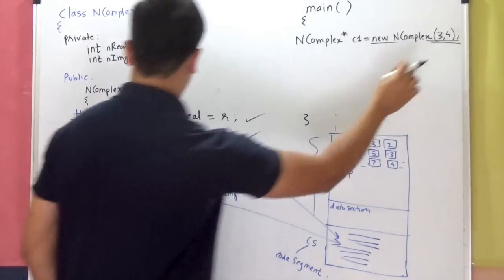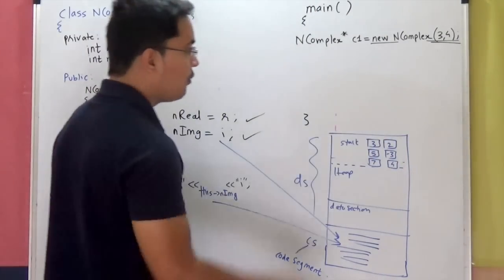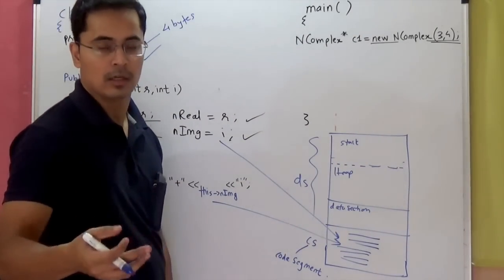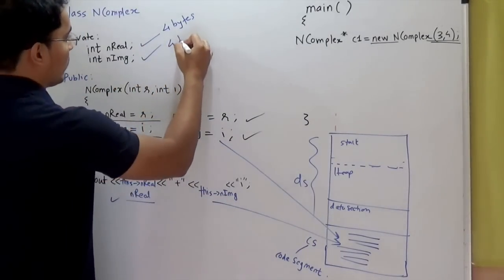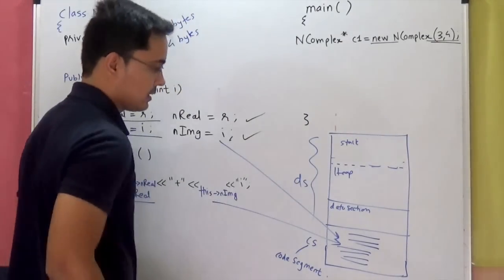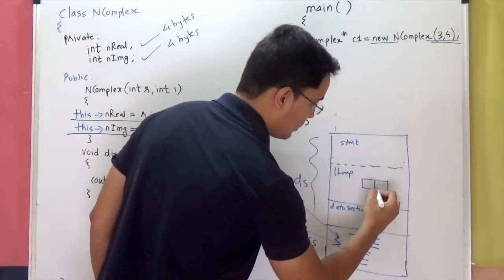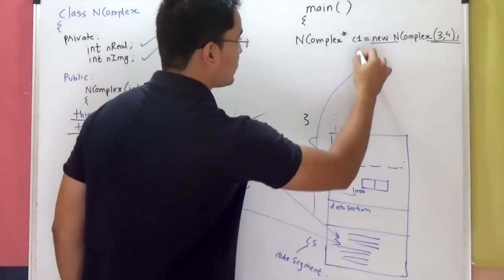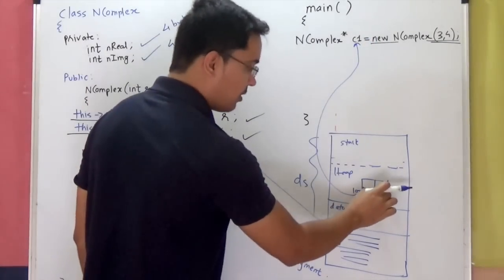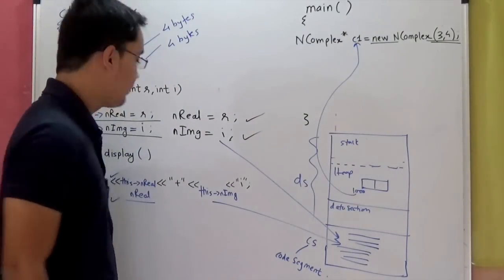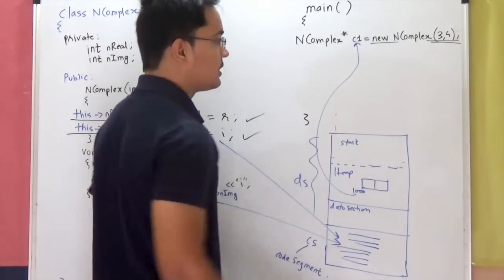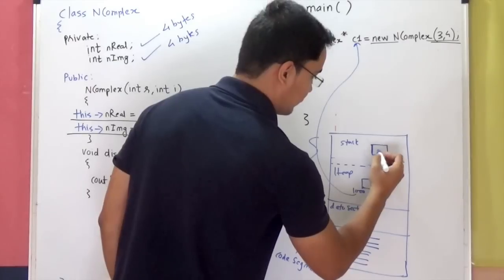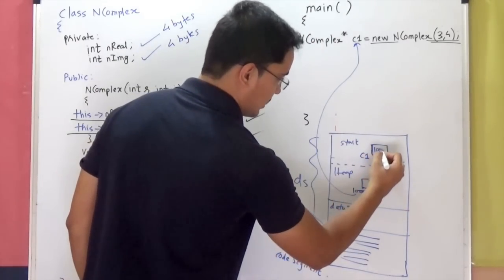So how will this object be created in memory? As I told you, the memory size of the object is determined by its data members. Here we have two integers, so this will require 8 bytes to be reserved from heap. The starting address — let's assume 1000 — will be given to C1. Now C1, which is the pointer itself, is a variable that will reside on stack. So C1 is on stack and it will store the starting address 1000. Once you have that, since C1 is a pointer, you can invoke the member function using C1->Display.